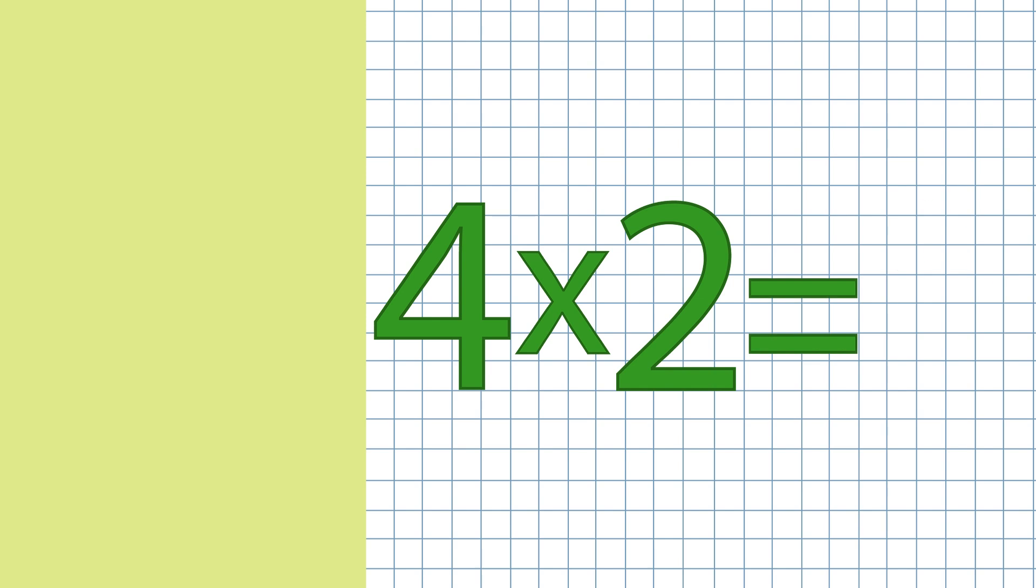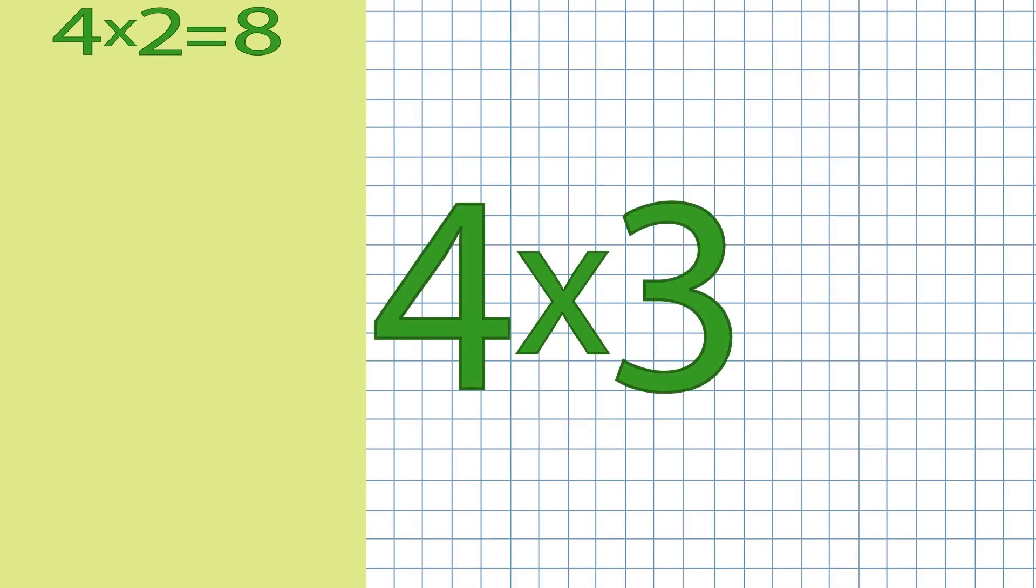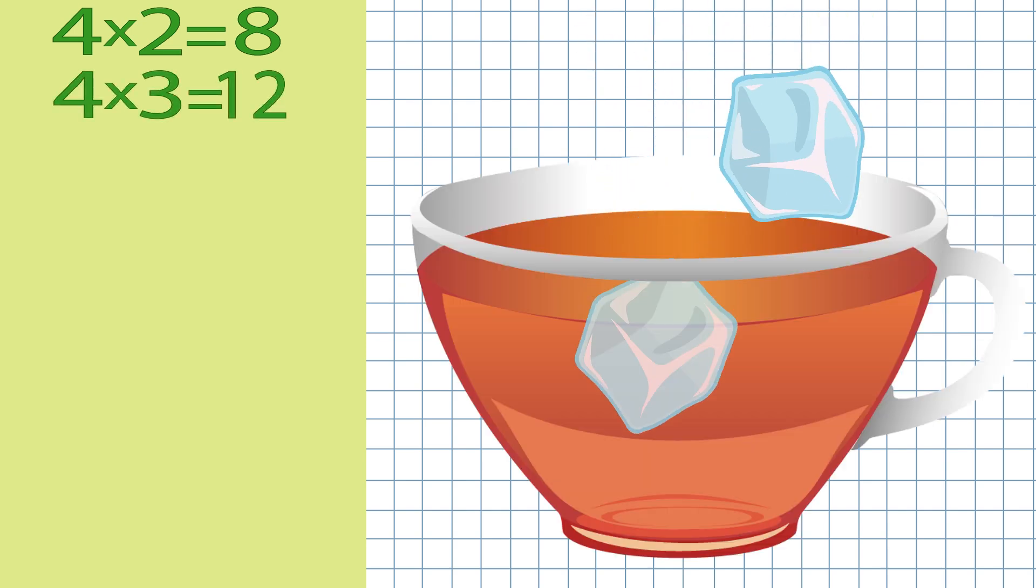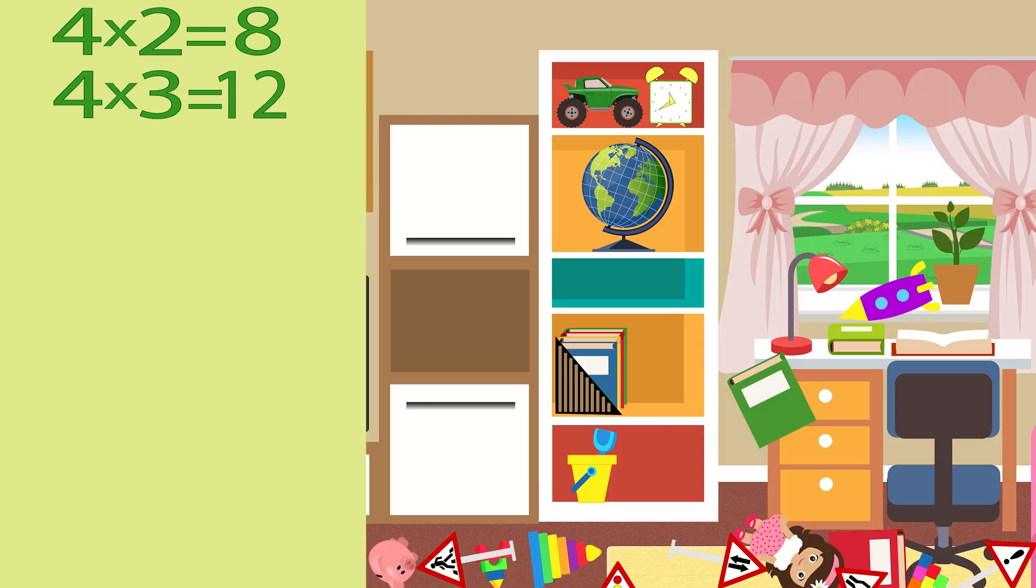Four times four makes twelve. Four times four makes sixteen.